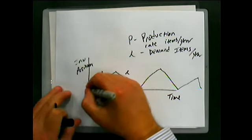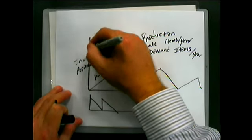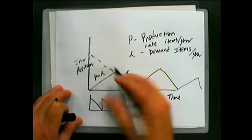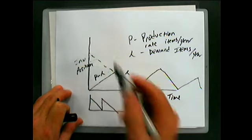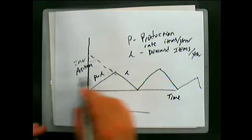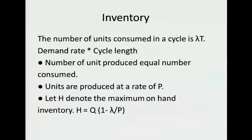Because remember, if this was instantaneous we would be all the way up here. And so we're cutting off all this inventory. As a result, our equation of Q over 2 no longer works, and what we have to do is modify that equation.